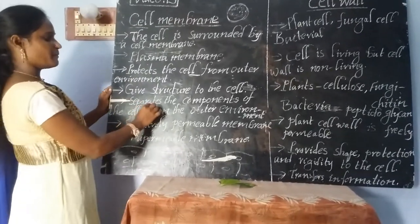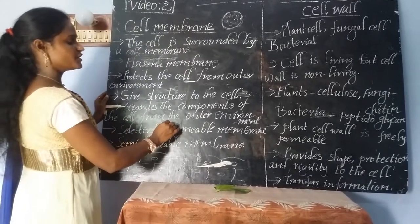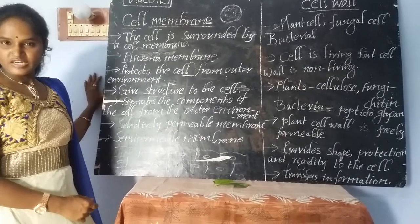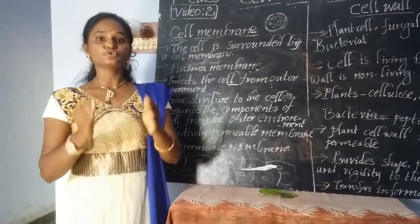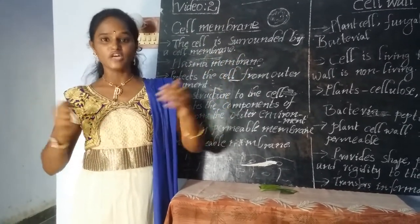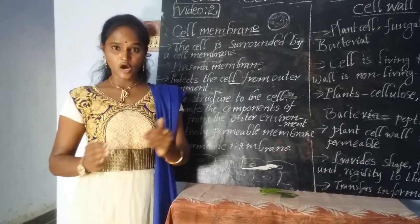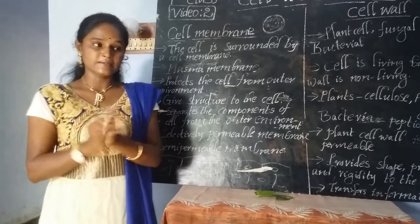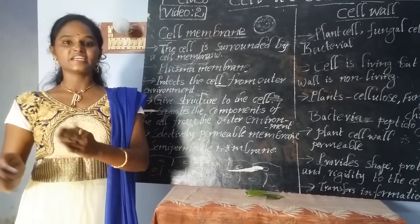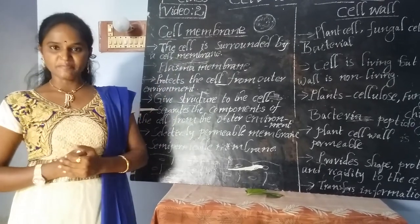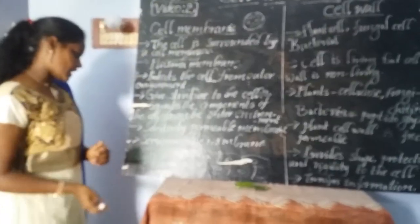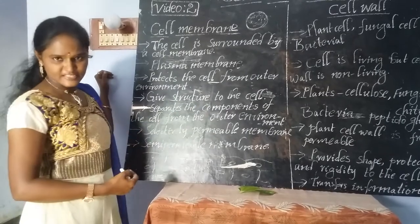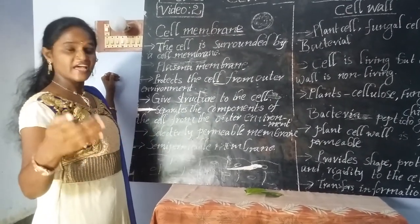The cell membrane separates the components of the cell from the outer environment. For example, just as the walls in your home have the capability to separate the rooms — like bedroom, kitchen, and hall — by the help of the walls we separate one room from another. In the same manner, the plasma membrane also has the capability to separate the components present in the cell from the outer environment.